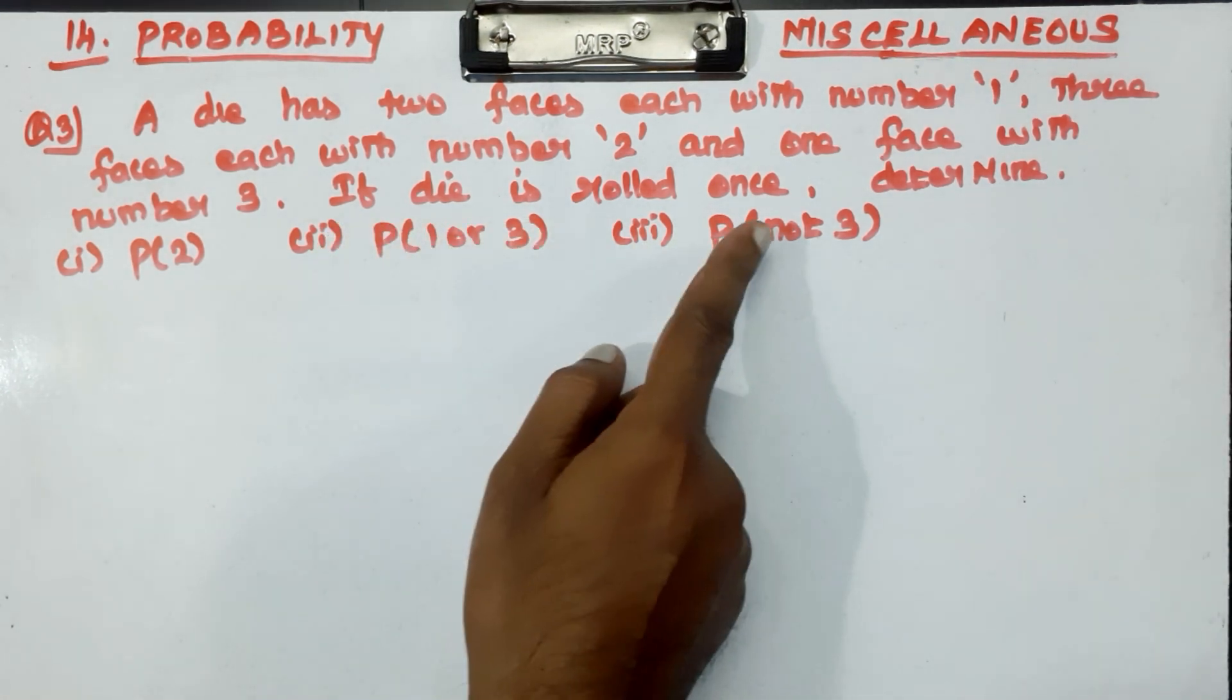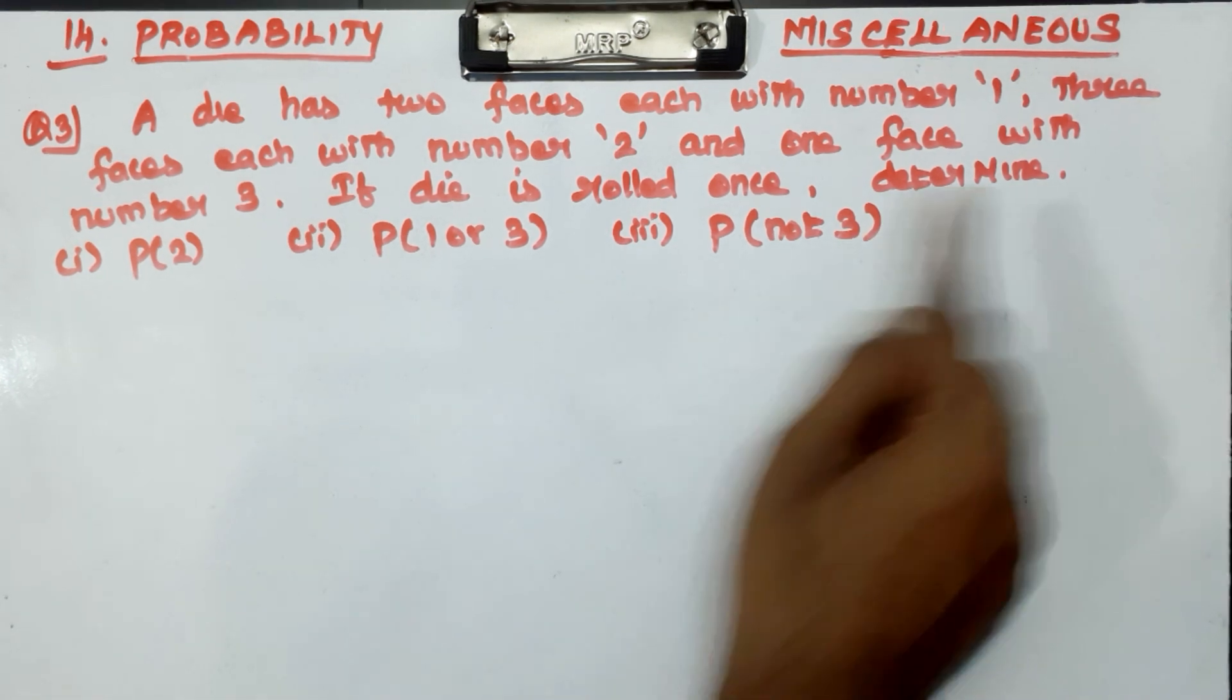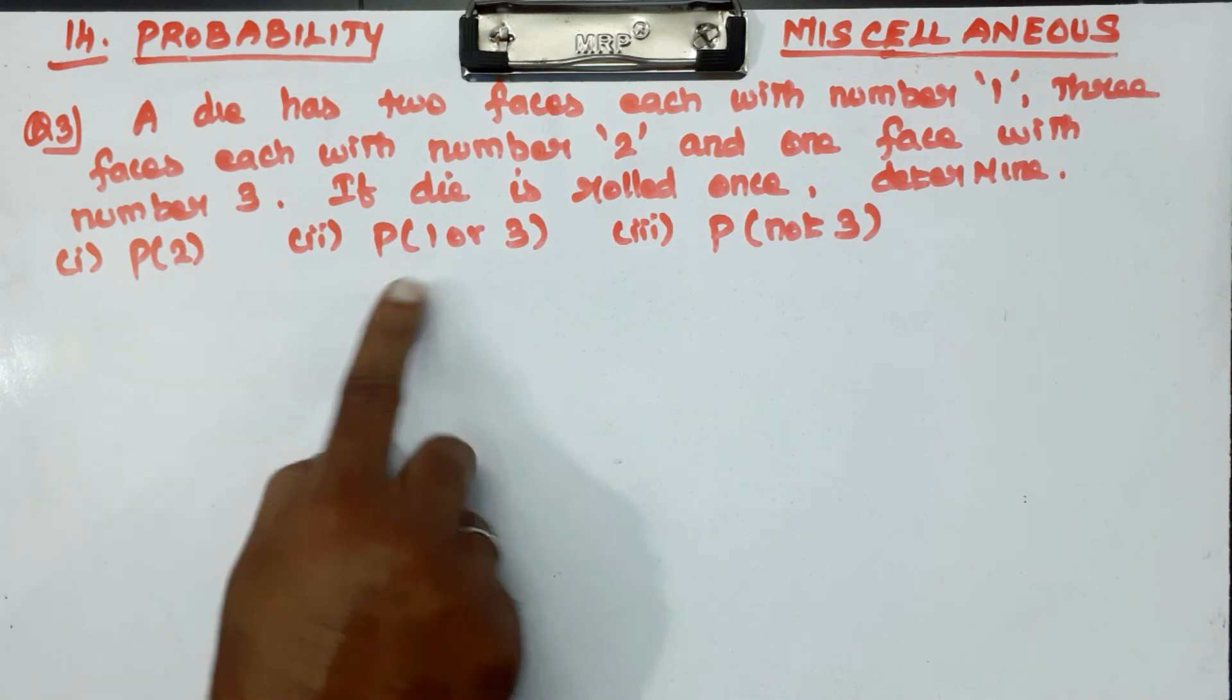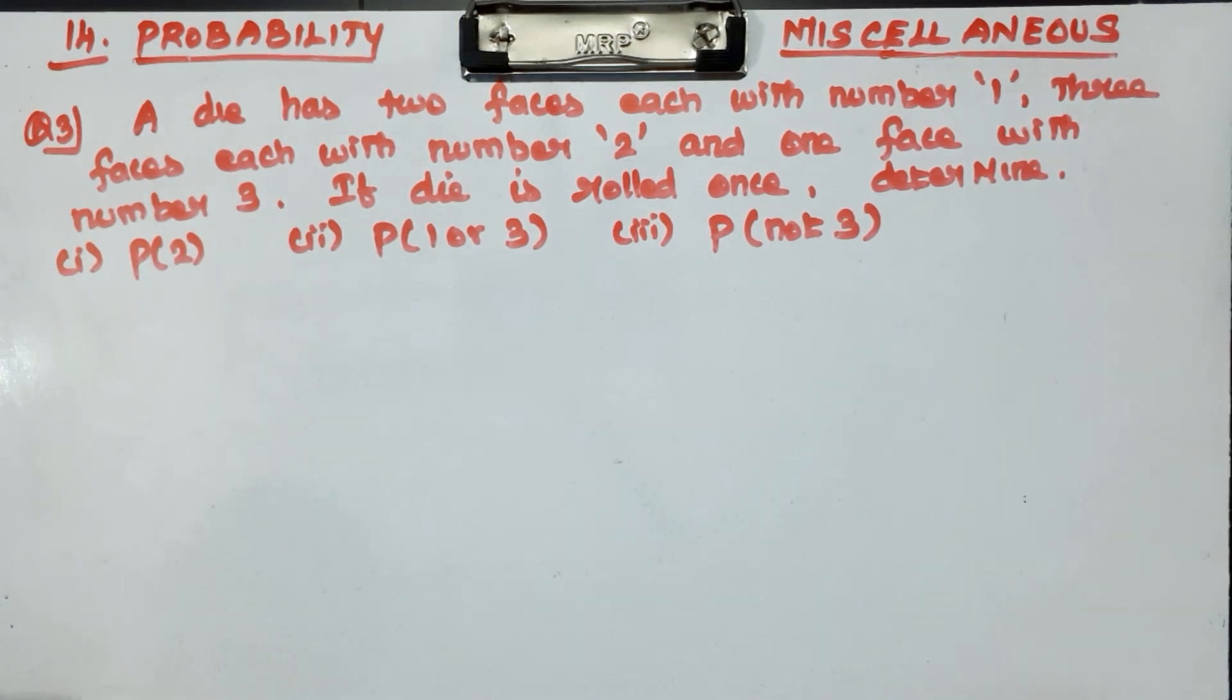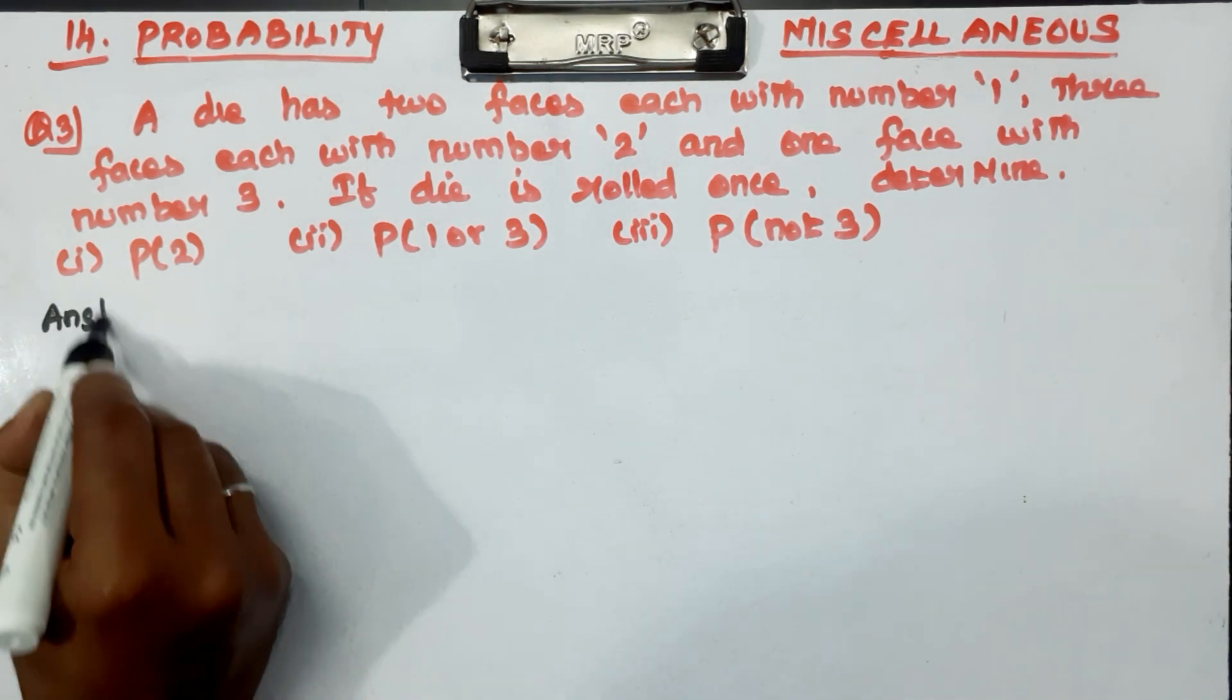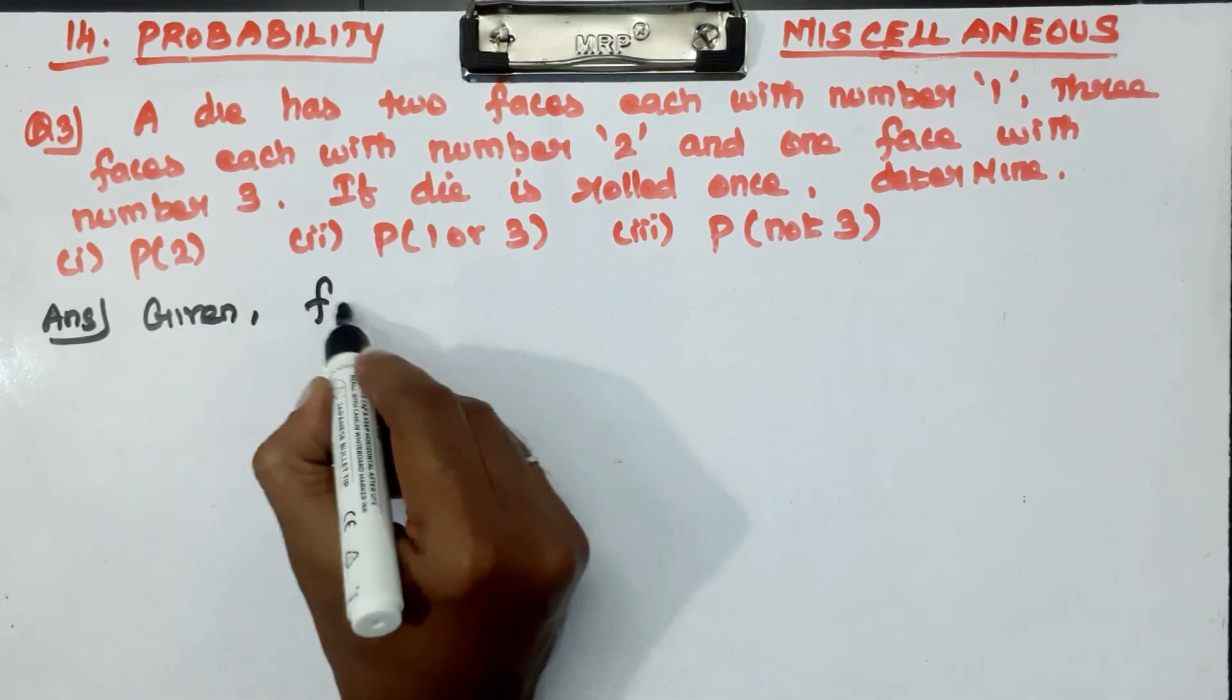If the die is rolled once, determine: probability of 2, probability of 1 or 3, and probability of not 3. That's the most important.